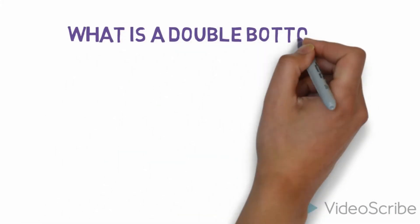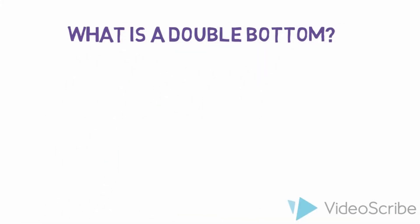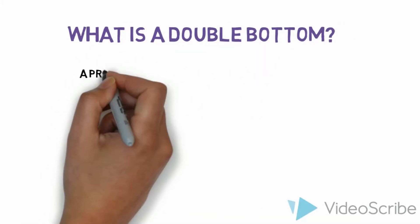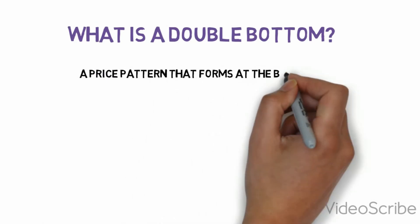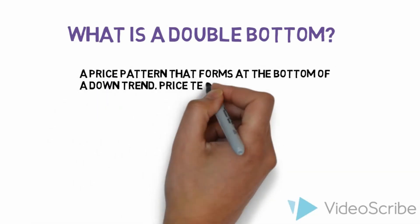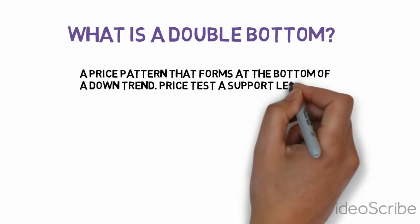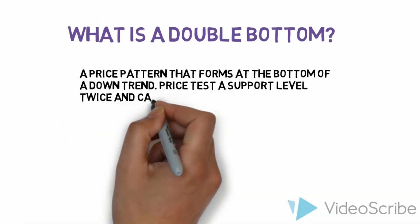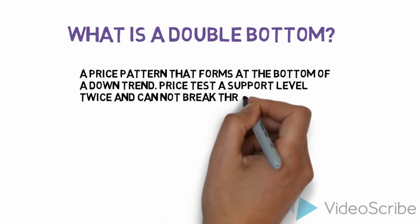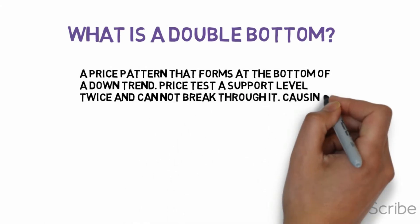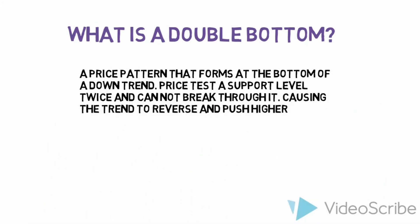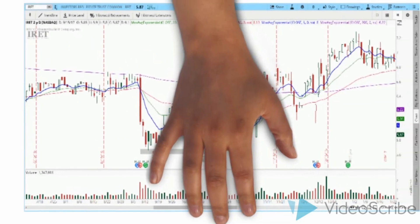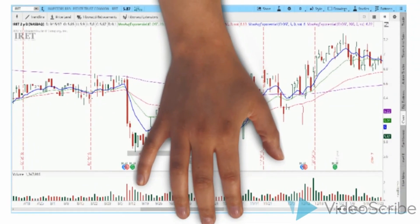So what is a double bottom? Well, it's similar to a double top. It's a price pattern that forms at the bottom of a downtrend. Price tests a support level twice and cannot break through. This causes the trend to reverse and push higher. Let's take a look at a few.